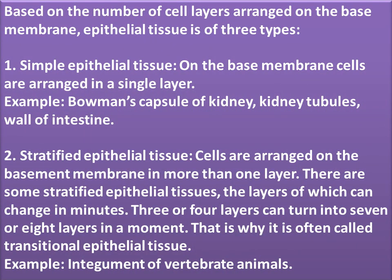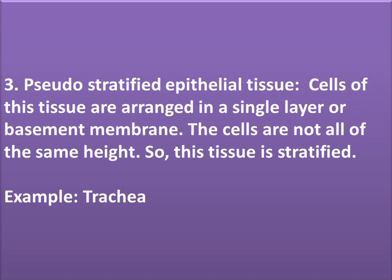Based on the number of cell layers arranged on the base membrane, epithelial tissue is of three types. 1. Simple epithelial tissue: cells are arranged in a single layer on the base membrane. Example: Bowman's capsule of kidney, kidney tubules, wall of intestine. 2. Stratified epithelial tissue: cells are arranged in more than one layer. Some stratified epithelial tissues can change their layers in minutes — 3 or 4 layers can turn into 7 or 8, so it is often called transitional epithelial tissue. Example: integument of vertebrate animals. 3. Pseudostratified epithelial tissue: cells are arranged in a single layer on the basement membrane but are not all of the same height, so this tissue appears stratified. Example: trachea.